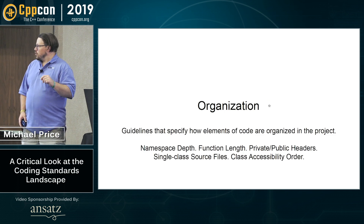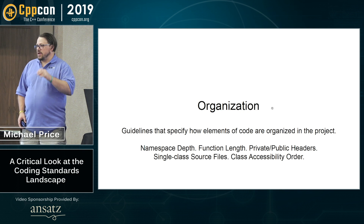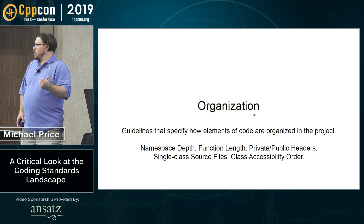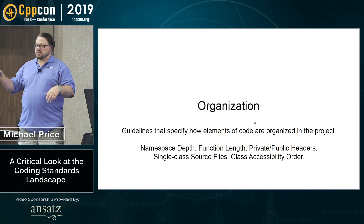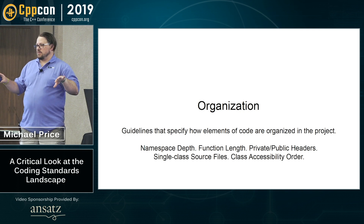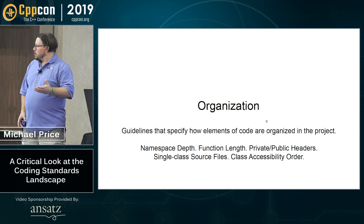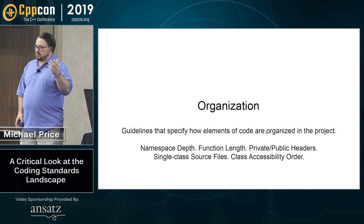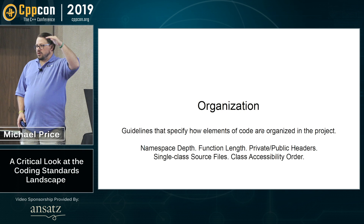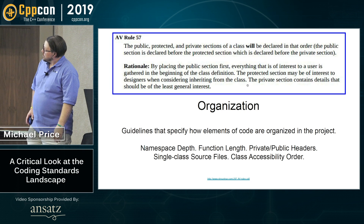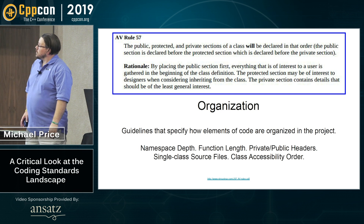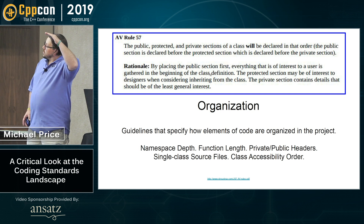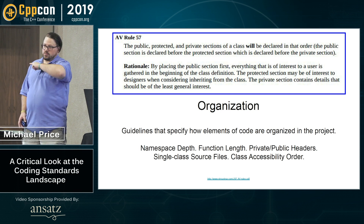Organization guidelines specify how elements of code are organized in the project — not necessarily within the code itself. It might be: how many namespaces are you allowing, what's the complexity of a function, how many lines should a function be, how do you lay out public vs. private headers on disk. An example from the Joint Strike Fighter Air Vehicle rules says you will declare class sections in public, protected, private order. We'll come back to this one later.